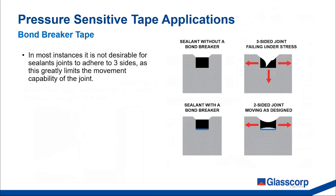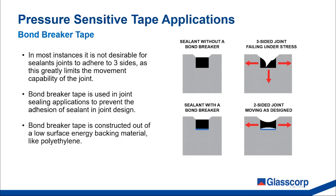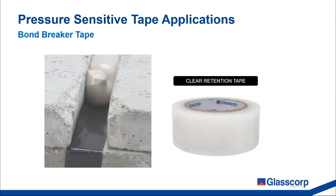In most instances, it is not desirable for sealant joints to adhere to three sides, as this greatly limits the movement capability of the joint. Bond breaker tape is used in joint sealing applications to prevent the adhesion of sealant to the joint design. Bond breaker tape is constructed out of a low surface energy backing material like polyethylene. In the diagram shown, sealant adhering to three sides fails and tears within itself when stress is applied. With a bond breaker tape at the base, the sealant can expand and contract as designed. We supply clear retention tape made from polyethylene which can be used as a bond breaker in these applications.